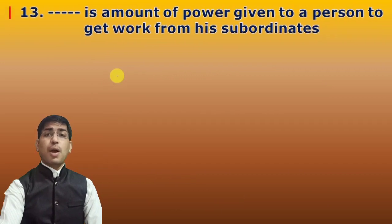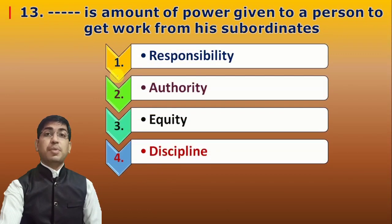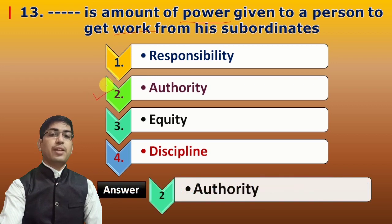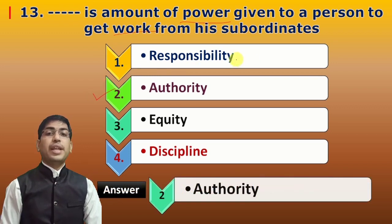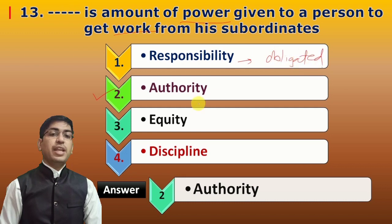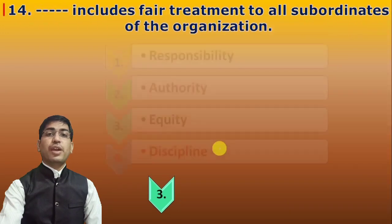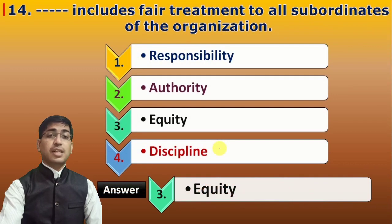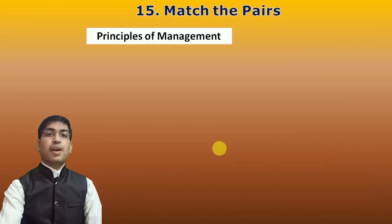Next questions on Fayol's principles: The amount of power given to a person to get work from subordinates is authority. When you are obligated to perform work, that is responsibility. Equity means fair treatment to all, and discipline means maintaining order. The question about fair treatment to all subordinates — the answer is equity.